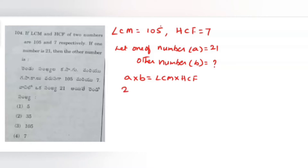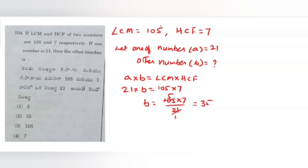Substituting: 21 multiplied by B equals LCM into HCF, which is 105 into 7. Therefore, B equals 105 into 7 divided by 21. Doing the cancellation: 21 ones are 21, 5 into 7 gives 35. So B, the other number, is 35. Our second option is correct.